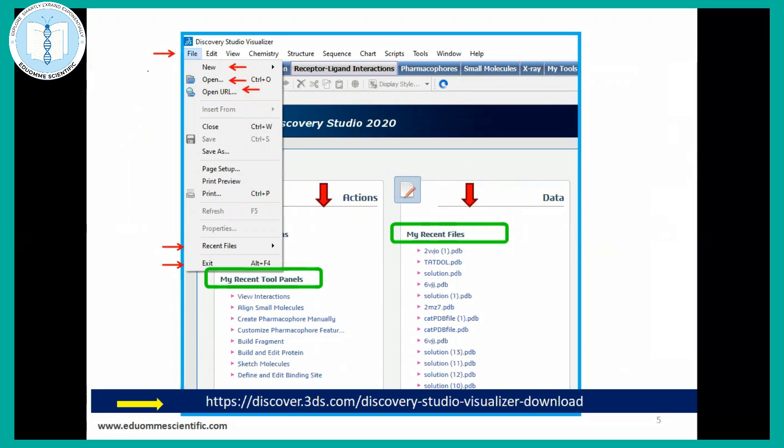If you already have work structures file, you may open from here or you may get it from the URL. Tool panels are given here and history is also provided here.